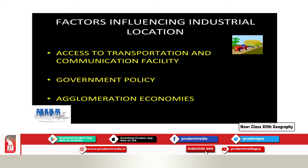Access to transportation and communication facility is another very important factor for industrial location. Next is government policy. When a large scale manufacturing industry is set up, the government introduces certain regional policies, and there is collaboration between industries and the government. The government gives rewards and financial incentives to industries. The government also decides the rules and regulations on whether an industry should be given permission to produce or carry certain products.